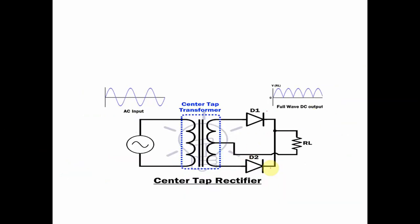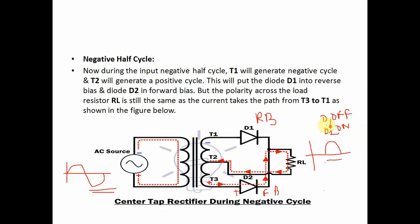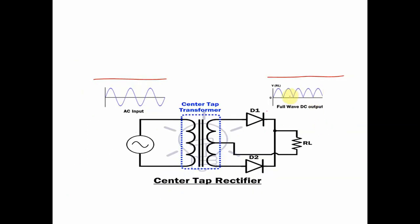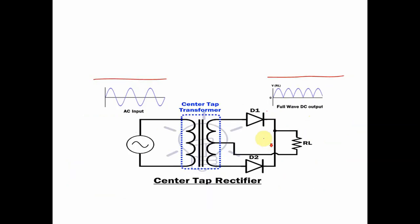This is the final waveform of the center tap rectifier. This is the input waveform and this is the output waveform. During the positive half cycle, D1 is ON and D2 is OFF. During the negative half cycle, D1 is OFF and D2 is ON.